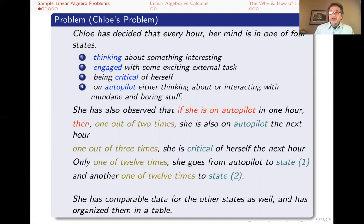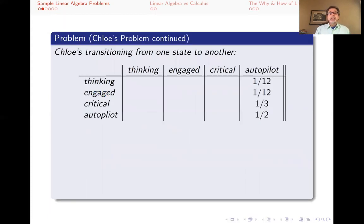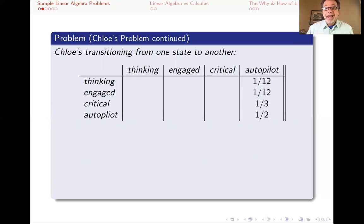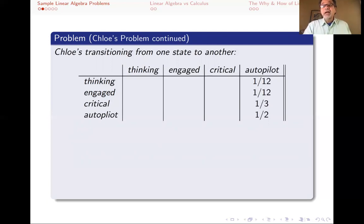She's also compiled data for the other states — if you're in some other state, what are the chances of moving to yet another one? All of this is put into a table showing the probabilities of transitioning from one state to another. The column headings tell us the state Chloe is at some hour, and the row headings tell us where she ends up. If she's on autopilot at one hour, then the next hour she's thinking about something interesting one-twelfth of the time, engaged with an external task one-twelfth of the time, being critical of herself one-third of the time, and on autopilot again half of the time.